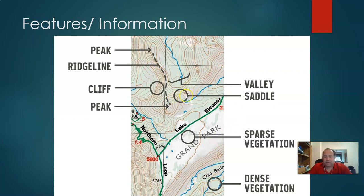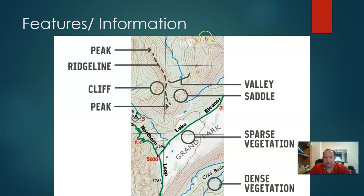We can look at certain changes in the contour lines. A shape like this shows a saddle — a dip between two ridges. Tight contour lines indicate a cliff. Where the contour lines get smaller and lead up to a small circle, that means a peak. Going peak to peak, we can see a ridge line in between. We can also see a valley where there's a ridge line on either side and the contour lines get far apart in the middle.